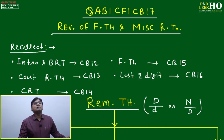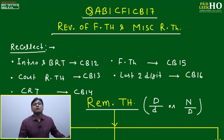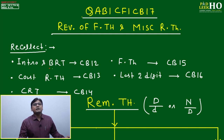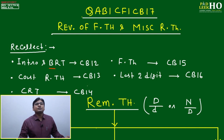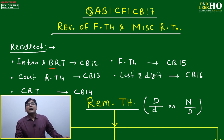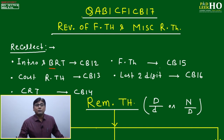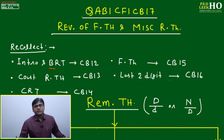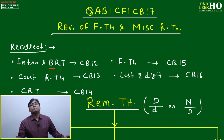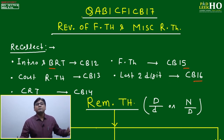Before starting, let's recollect what we've done in the five previous remainder theorem sessions. The first session was an introduction to Basic Remainder Theorem (cv12), cv13 was Constant Remainder Theorem, cv14 was Chinese Remainder Theorem, cv15 covered Fermat's Theorem, Euler number and co-primes, and cv16 covered last two digits.